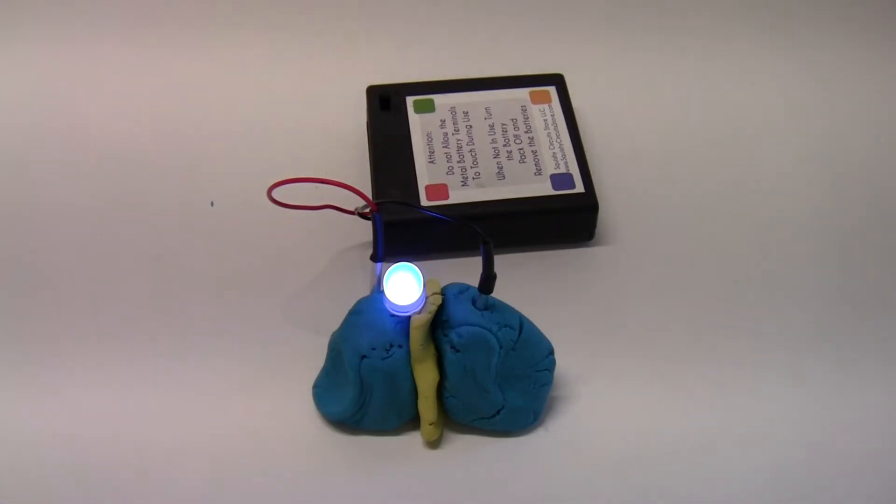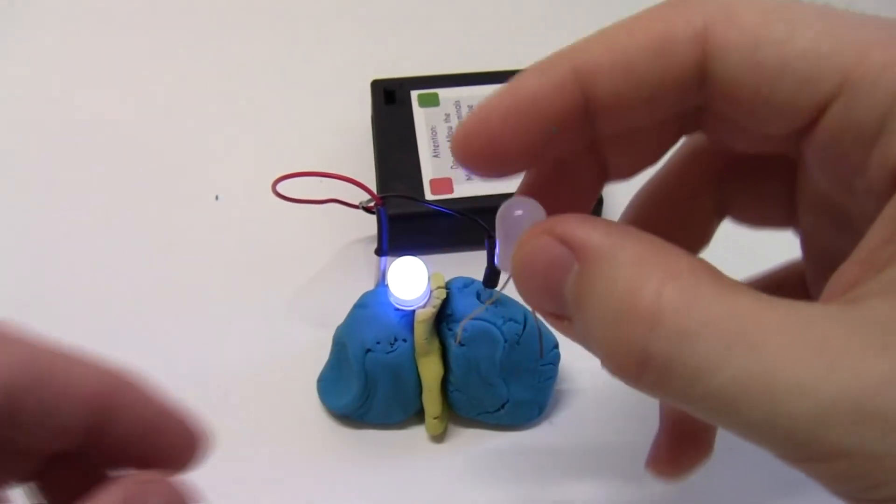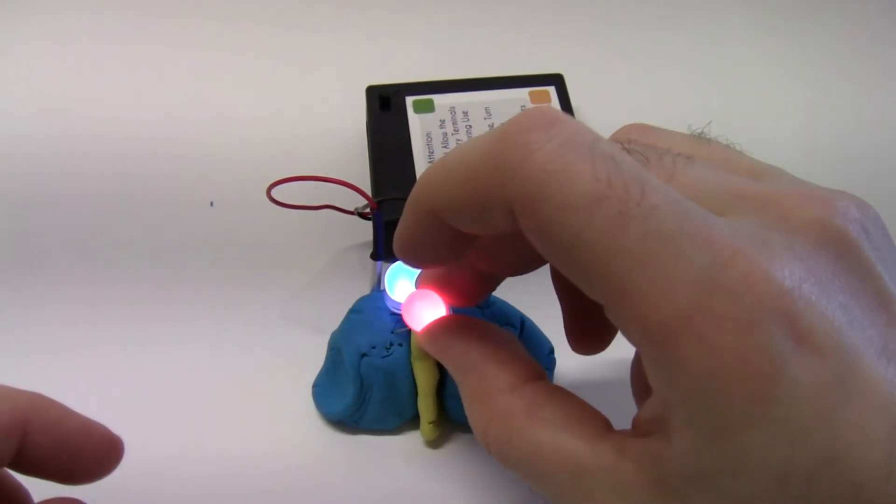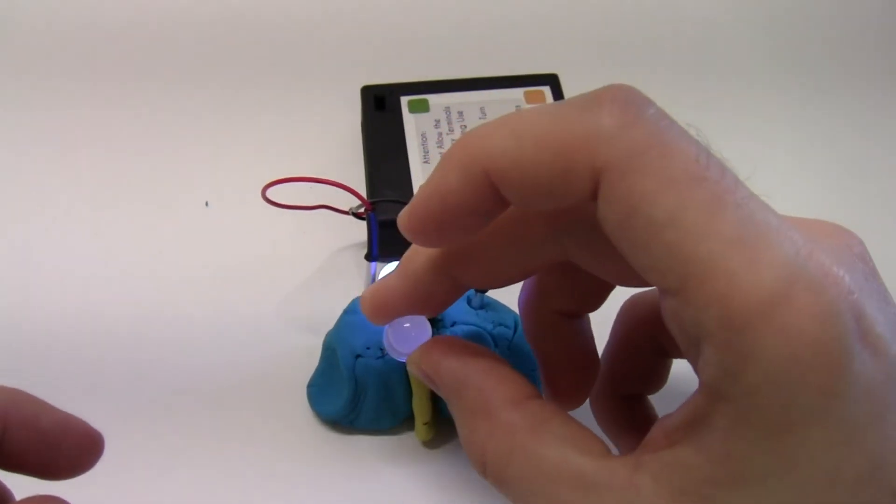Now finally, you probably want to use more than one LED. All you have to do to add more LEDs is take them and do the same thing you did before, spread the metal legs apart slightly, and plug them in right next to your first LED. Now if it doesn't light up, remember that all you need to do is flip it around.